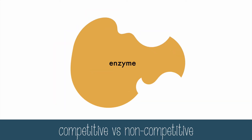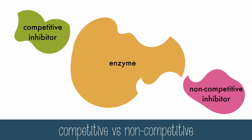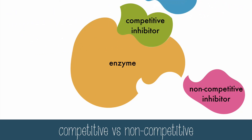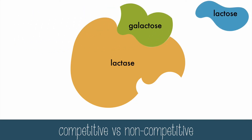The active sites and allosteric sites can be hijacked by inhibitors, which will slow or even stop the action of an enzyme. There are two categories of inhibitors: competitive and non-competitive. Competitive inhibitors bind at the active site, preventing the substrate from being able to bind. A real example is galactose, which binds to the active site of lactase, blocking the substrate lactose from being able to bind.